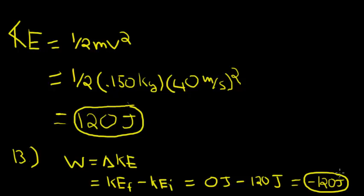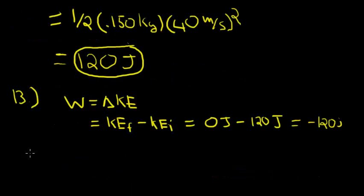And now for Part C, the question asks if the work done by the catcher is positive or negative. And we know that we got a negative answer for Part B. And this is because the work done by the catcher decreases the kinetic energy of the ball. So therefore, we know that the answer to Part C is negative.